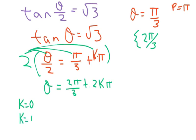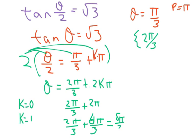That would be 2 pi over 3 plus 2 pi, which is the same as 2 pi over 3 plus 6 pi over 3. The common denominator is 3. This gives us 8 pi over 3, which clearly is bigger than 2 pi. So we have to disregard this one.